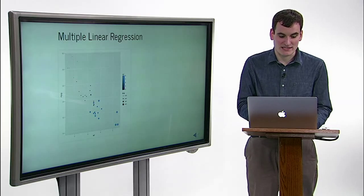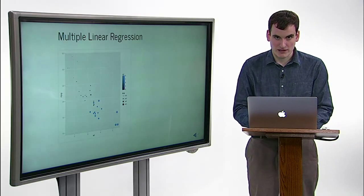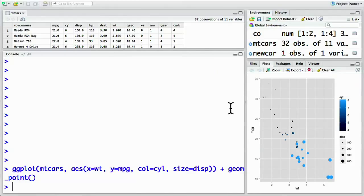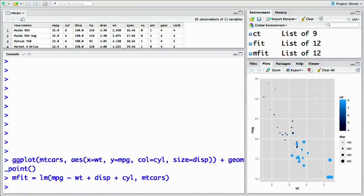We provide multiple terms in the right side of the linear regression formula. So here we see LM, let's say mfit equals LM of miles per gallon explained by weight plus displacement plus the number of cylinders. We give it the data we're using, mtcars. Now let's summarize this fit.